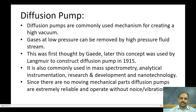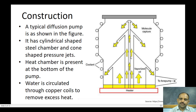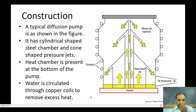Looking at the typical diagram of the diffusion pump, it has a cylindrical shaped chamber in which cone-shaped pressure jets are arranged one inside the other. At the bottom, the heat chamber is present. Water is circulated through copper coils to remove excess heat — wherever the circles are shown, those represent the copper coils through which the coolant flows.